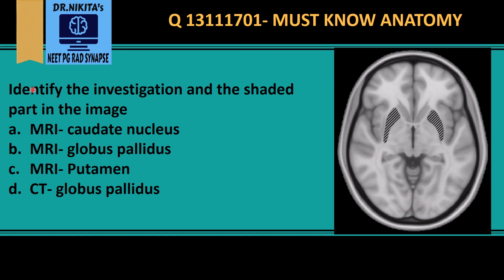In this question we have to identify the investigation and the shaded part. This is an MRI of the brain because the bone cortex here is black. To identify a CT or MRI, always look at the bone cortex: if it is white, it's a CT scan; if it is black, it's an MRI, like in this image. So option D is automatically ruled out because it states it's a CT scan, which is incorrect.